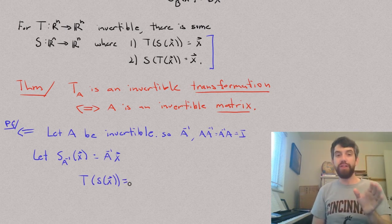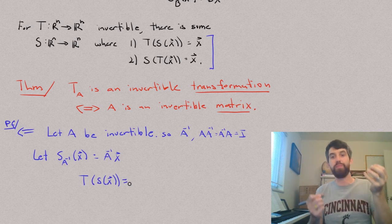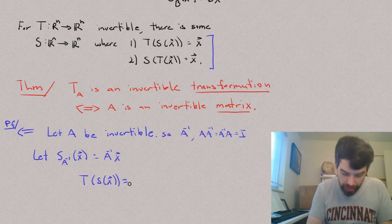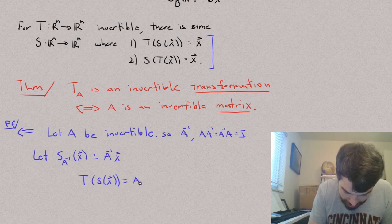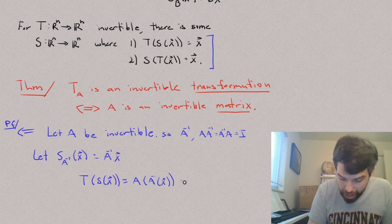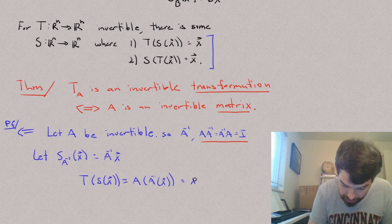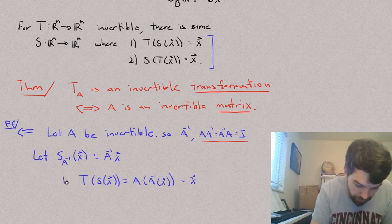Well, by the definitions, S here is going to be represented by matrix multiplication by A inverse. T is represented by multiplication by A. So, this is just going to be equal to A of A inverse of X, which by our nice property that we have previously defined is just precisely going to be equal to X. So, that's my first of my properties.